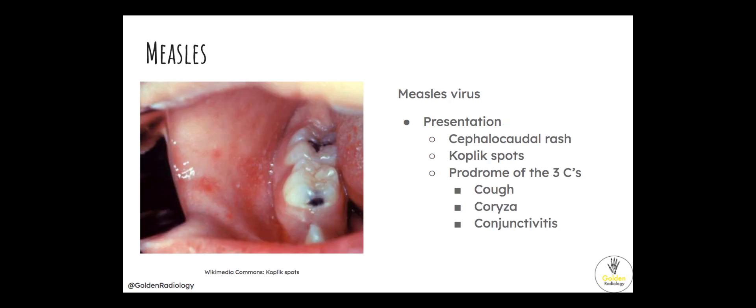Measles is caused by the measles virus. Classically you'll get a cephalocaudal rash, starting from the head and moving downward. They'll likely show you Koplik spots — white dots in the buccal mucosa. Before the rash breaks out, you get a prodrome of the three C's: cough, coryza, and conjunctivitis.